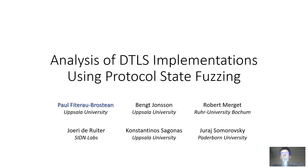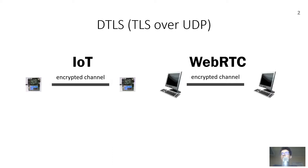Hello, my name is Paul Fiterow, and in the following minutes I'll present our work on analyzing DTLS implementations using protocol state fuzzing. DTLS is an adaptation of TLS used to secure communication over UDP. DTLS is often employed in applications where UDP is preferred to TCP, including IoT as well as real-time applications such as WebRTC.